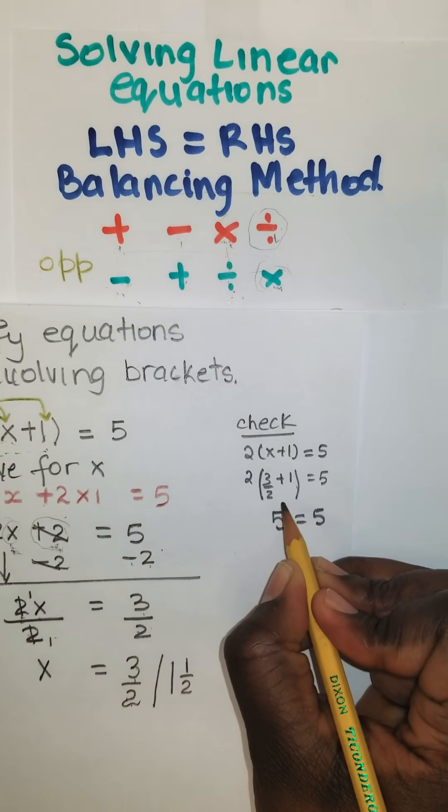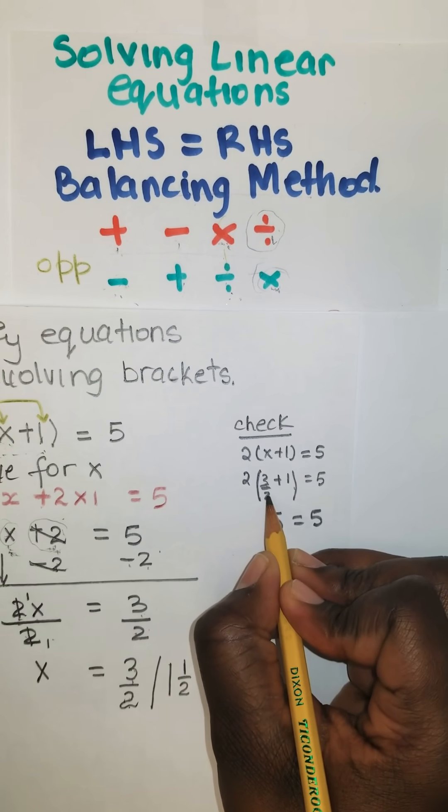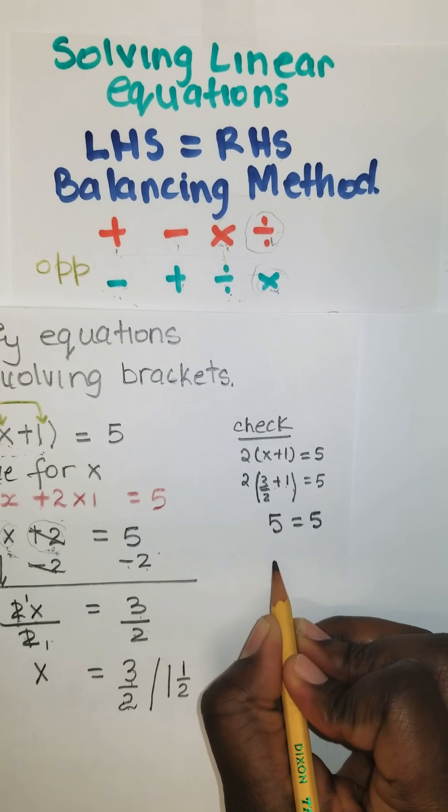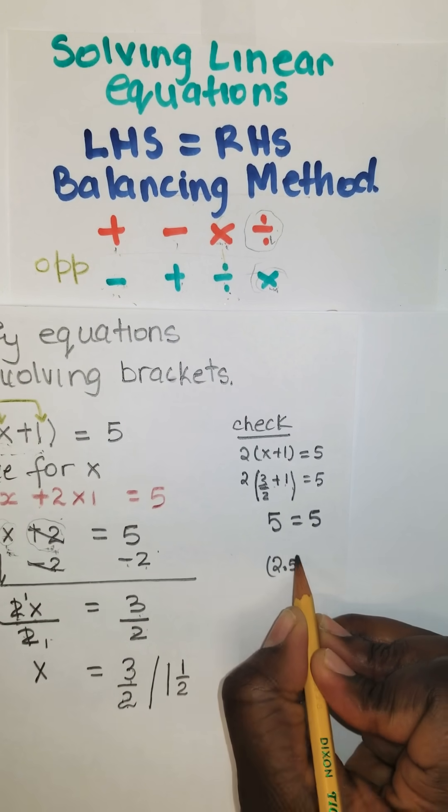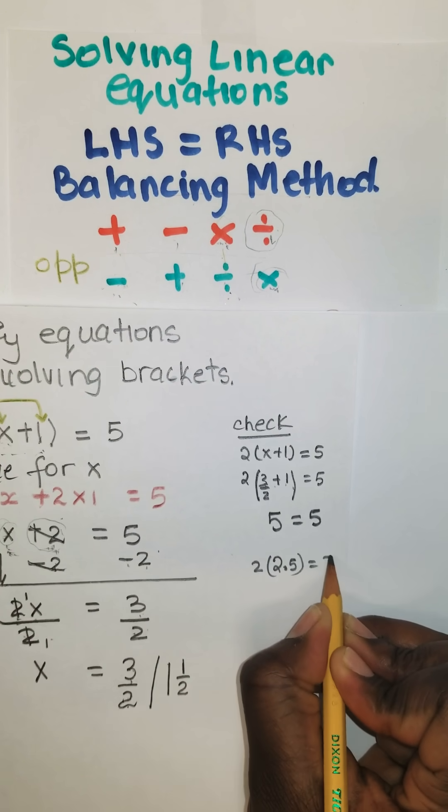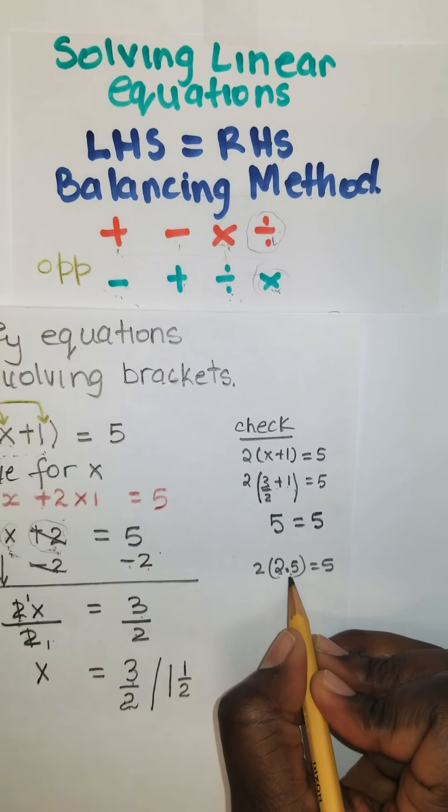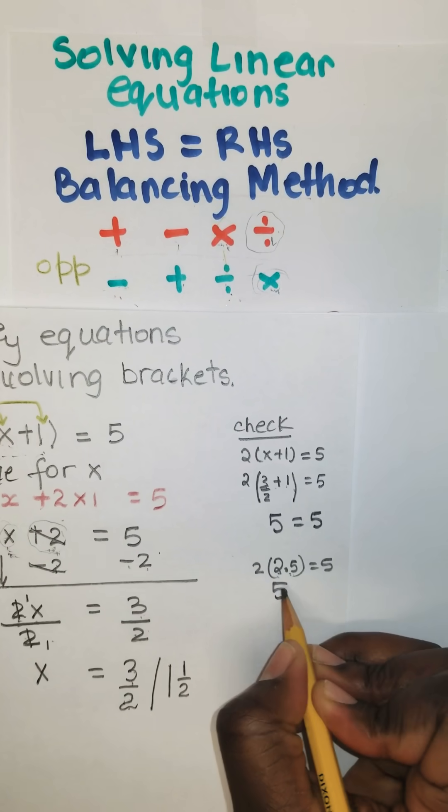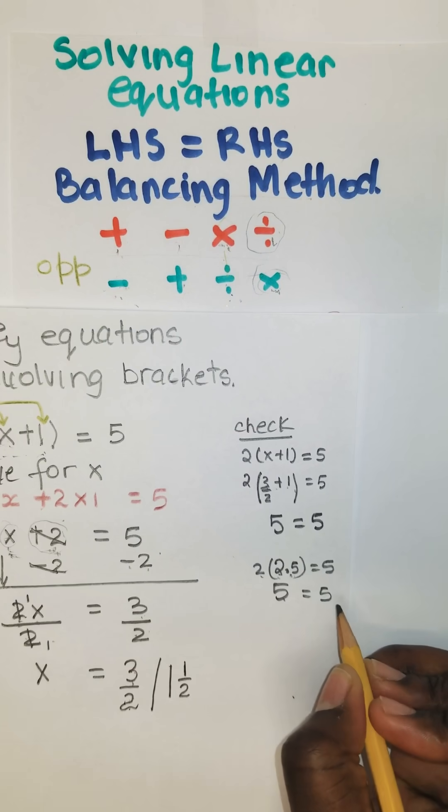Or if you didn't want to do it that way, it's basically saying 3 over 2 is 1 and a half. So 1 and a half plus 1 is basically 2 and a half, right? Times 2 is equal to 5. 2 and a half is basically 2.5. And 2 and a half times 2 is 5. So 5 is equal to 5.